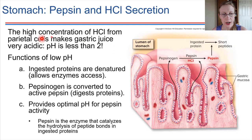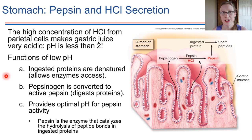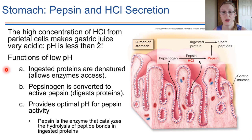This acidic environment inactivates other enzymes. In the mouth, salivary amylase starts the digestion of starch — that enzyme's optimal pH is neutral, around pH 7. Once that enzyme enters the stomach, it's going to be inactivated. So starch digestion is put on hold while in the stomach, and will continue once we reach the small intestine where it's not quite so acidic anymore.